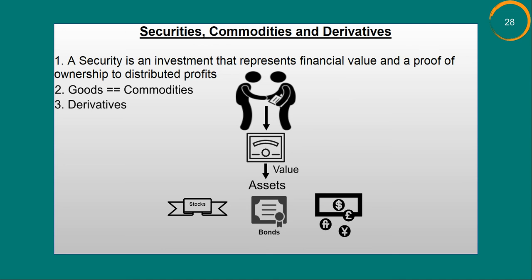The value of secondary securities will be based on the primary security. It's worth noting that while derivatives' value is based on the underlying asset, ownership of the derivative doesn't mean ownership of the asset itself. That is, if you own derivatives on the stock of company ABC, you just own the contract — the derivative — and not the stocks of company ABC itself.